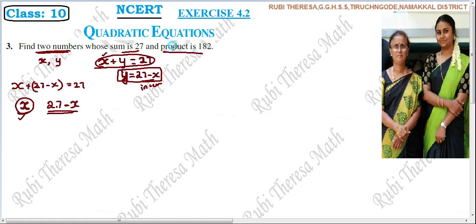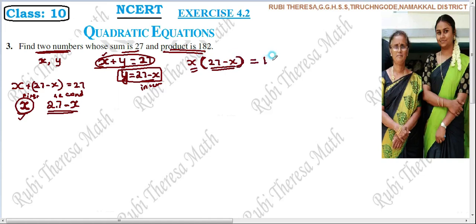Next, the product is 182. If the first number is X and the second number is 27 minus X, then the product of the two numbers is X into (27 minus X) equals 182. Expanding: X into 27 is 27X, and X into minus X is minus X squared, equals 182.